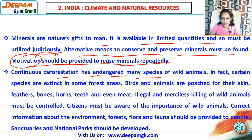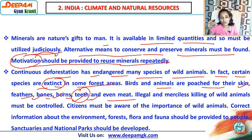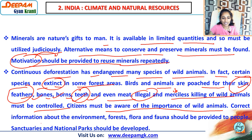Continuous deforestation has endangered many species of wild animals, and certain species are restricted to specific forest areas. Birds and animals are killed for their skin, feathers, bones, horns, teeth, and meat. For example, elephant teeth are very valuable; tiger and lion skins are removed to make purses and leather belts; peacock feathers are used to make earrings. Illegal and merciless killing of wild animals must be controlled. Citizens must be made aware of the importance of wild animals, and correct information about the environment, forests, flora, and fauna should be provided to people.